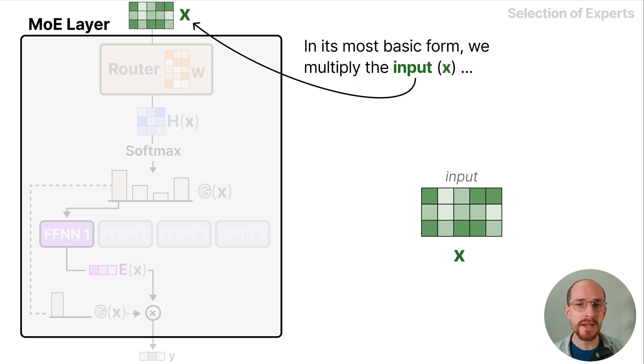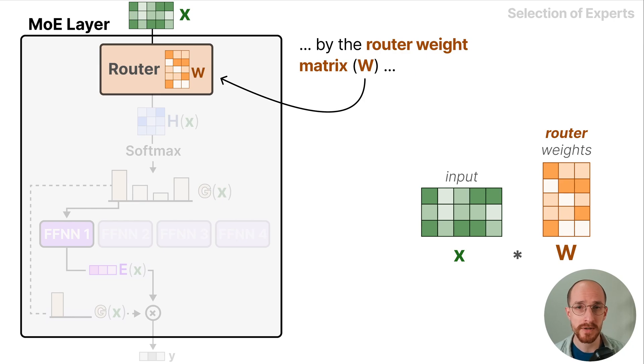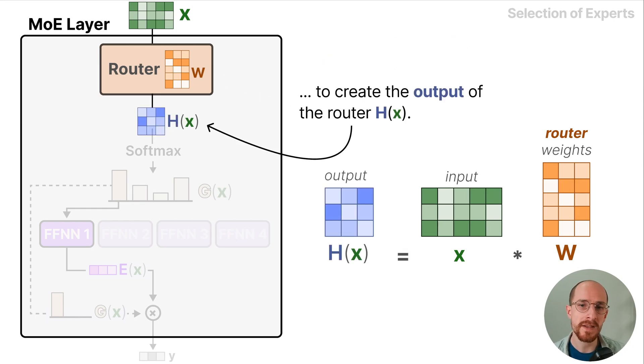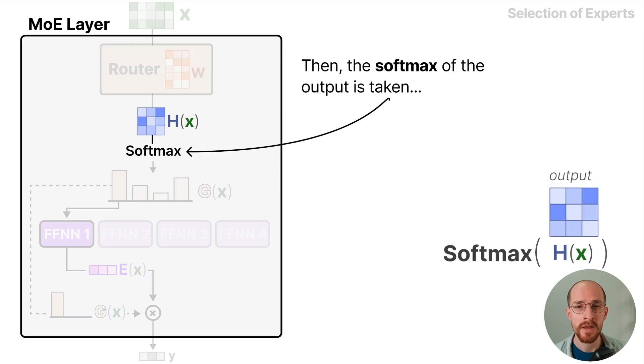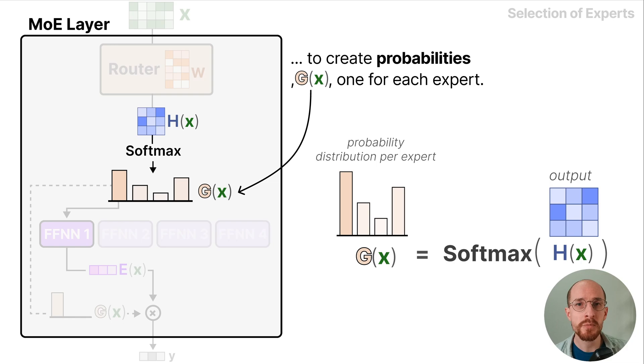In its most basic form we multiply the input x by a router weight matrix w to create the output of the router which we call h. Then the softmax of the output is taken to create probabilities g, one for each expert.